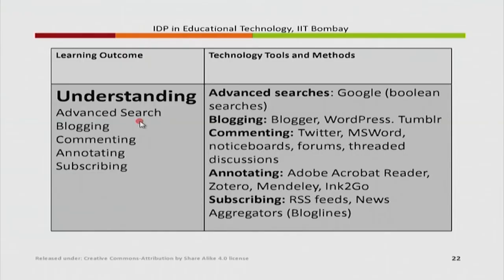Within the understanding level, you have some more purposes and learning activities. You can have advanced searches where you search for particular expressions like Boolean searches, or blogging, commenting using Twitter or forums, annotating using Mendeley or Adobe Reader, or subscribing to RSS feeds or aggregators. All these tasks come under the understanding level within the Digital Bloom's Taxonomy.